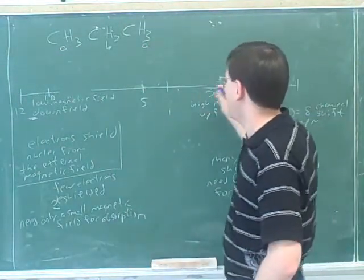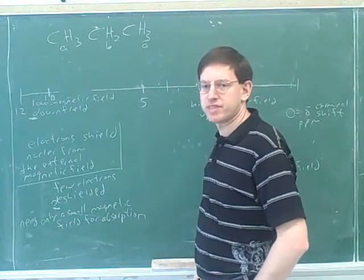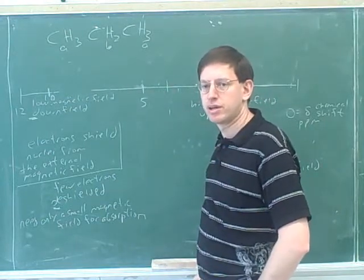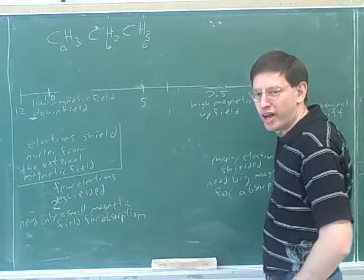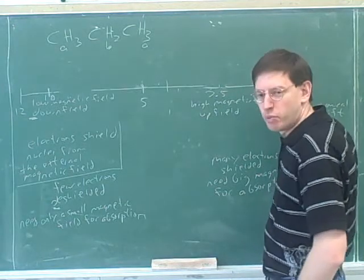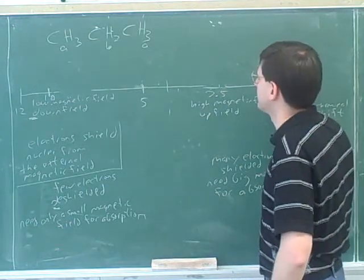Between, say, 0 and 2.5, or 2.5 and 5, or 5 and 7.5? Like between 0 and 1? Yeah, these should be pretty close to 1. Maybe a little bit above 1, but in the 1 region, because there's nothing electronegative around here.